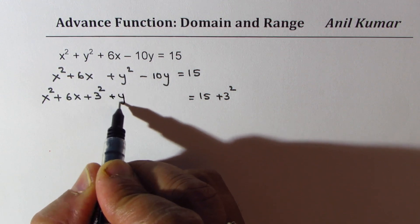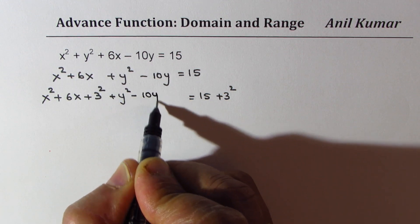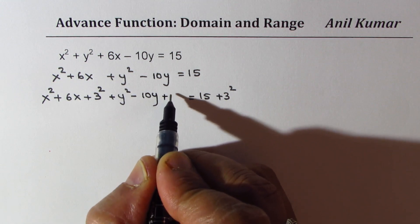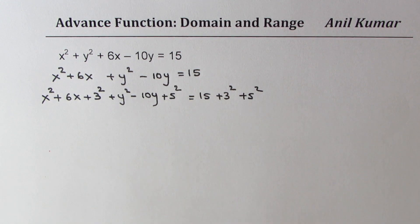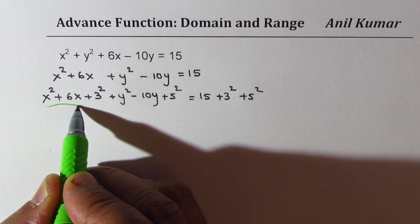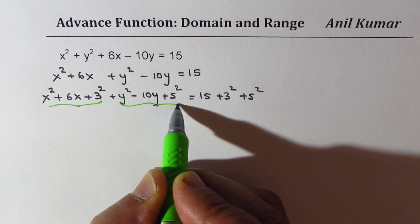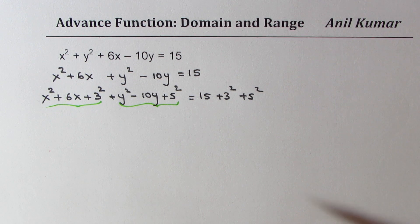Here we have y square minus 10y, half of 10 is 5 so I am going to add 5 square now on both the sides. So that is completing the square step. As you can see, these three terms and these three terms could now be written as a perfect square.